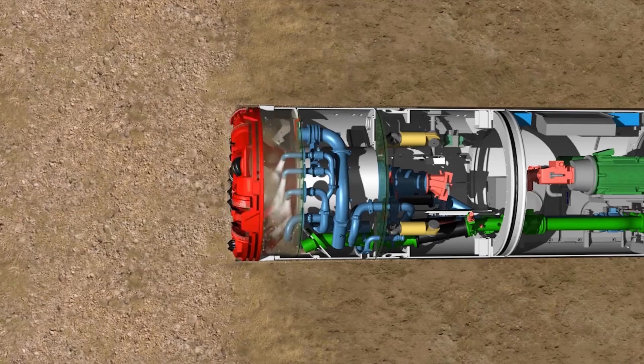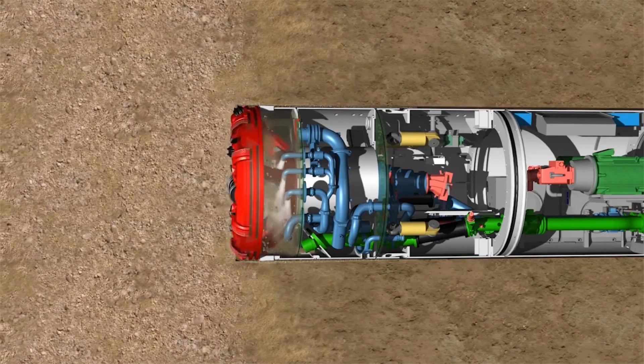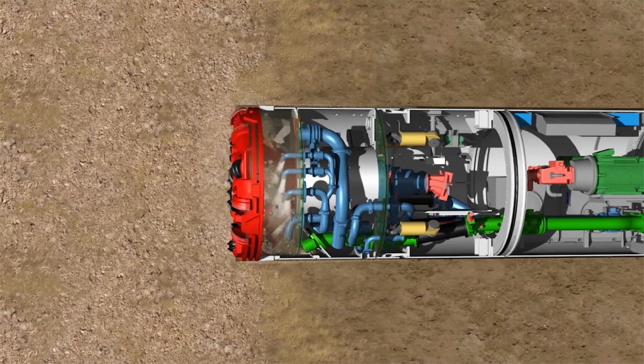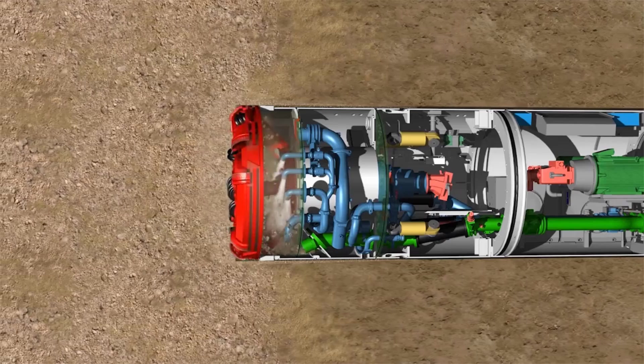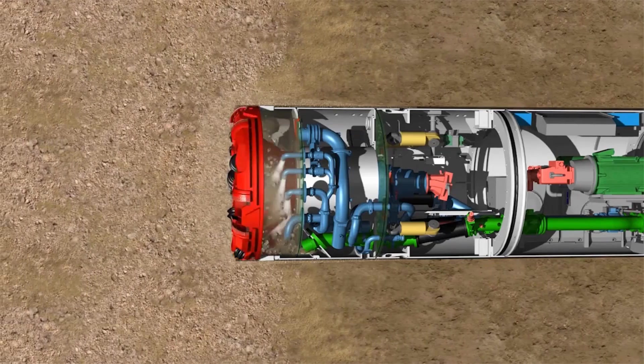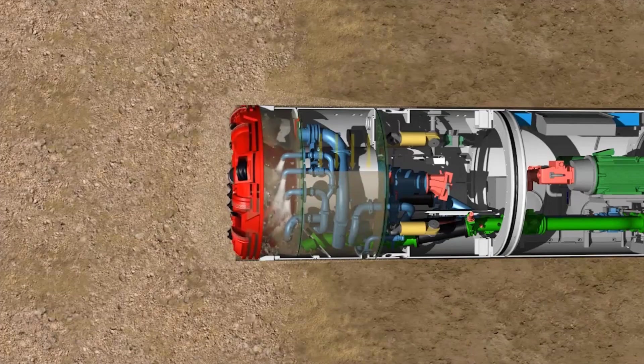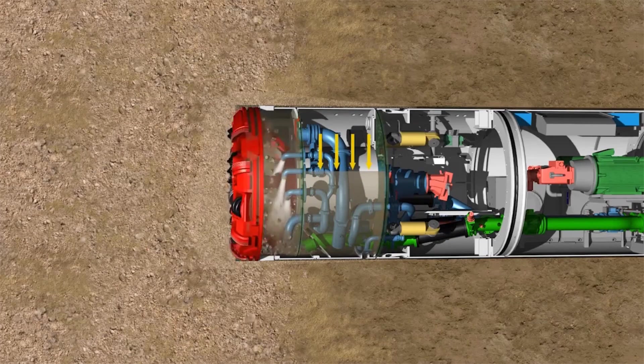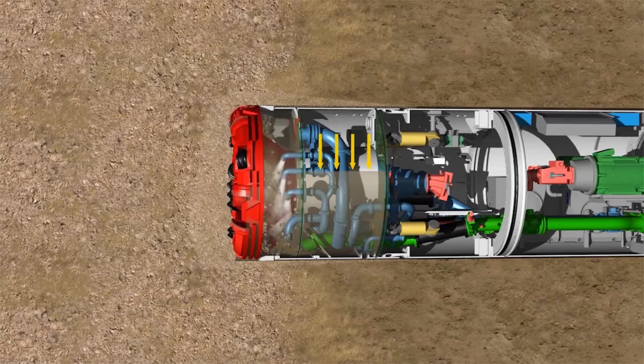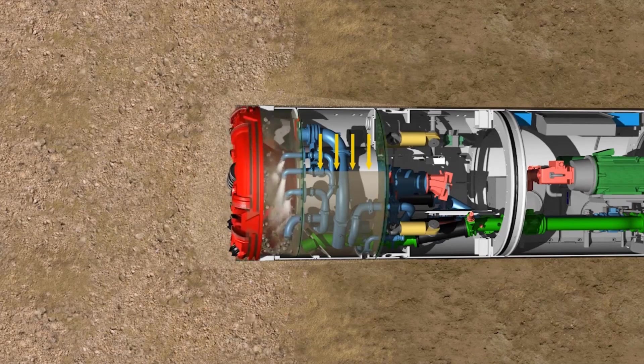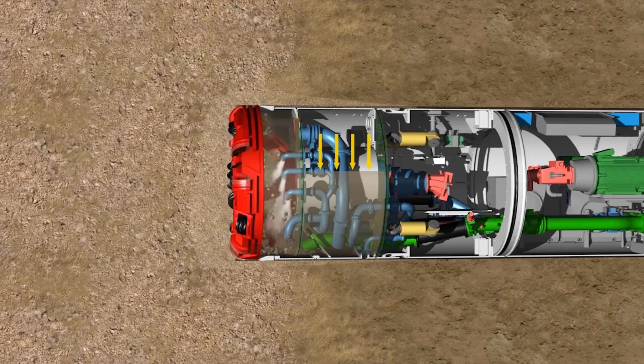When tunneling through less cohesive, coarse-grained soils, the machine is switched to mixed shield mode. Behind the excavation chamber is the pressure chamber, which is empty in slurry mode. In mixed shield mode, this is flooded with bentonite and pressurized with a compressed air cushion. To this end, the compressed air supply is activated, the support fluid enriched with bentonite, and the nozzle configuration switched.